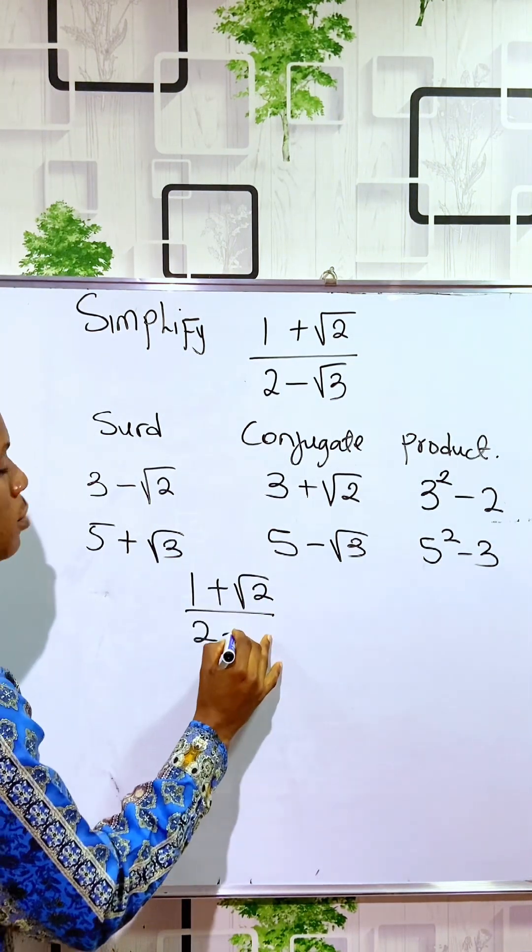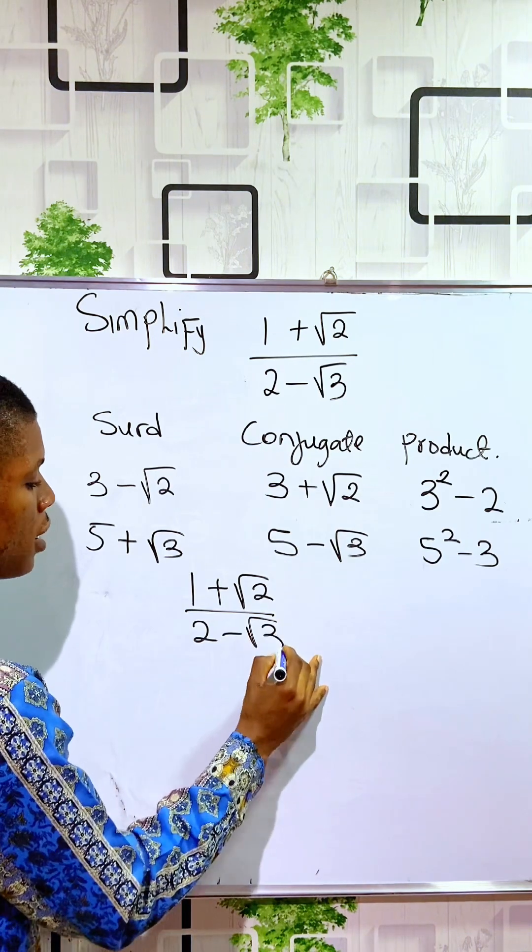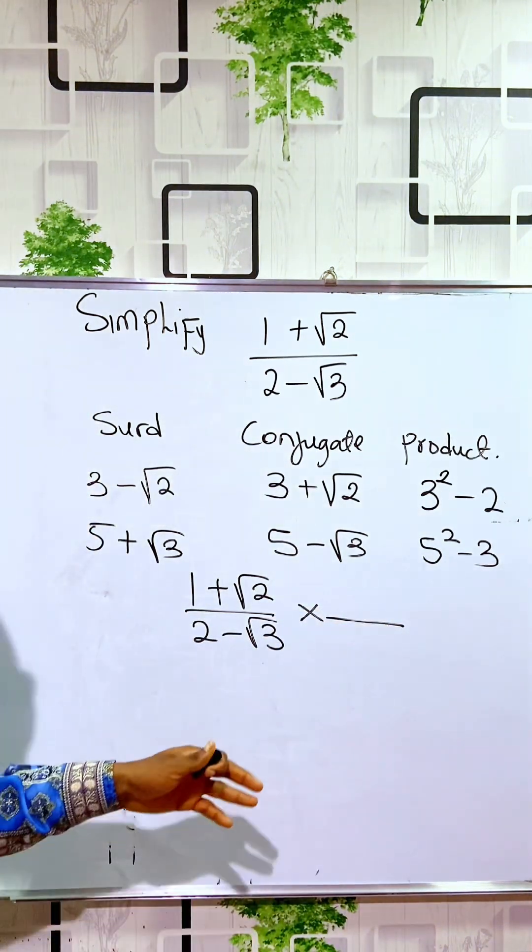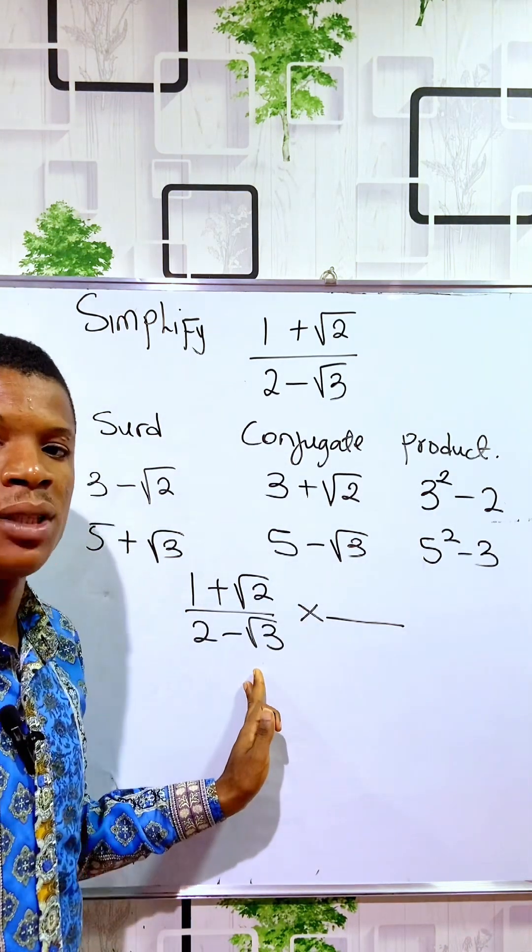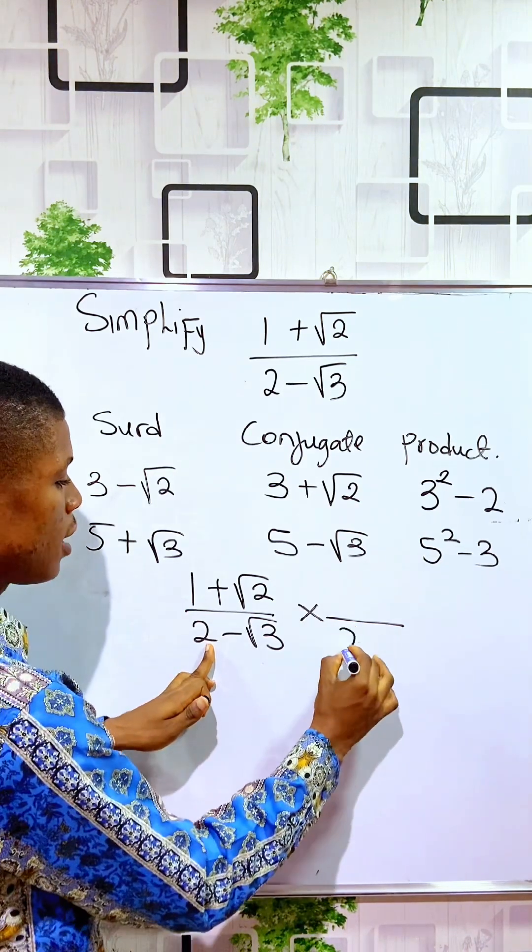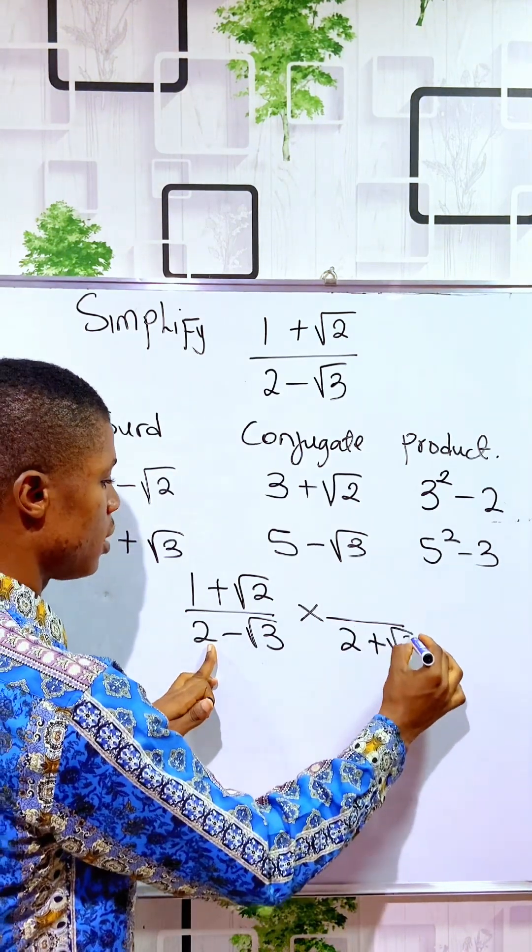All you have to do is just multiply the conjugate surd to the denominator and numerator to maintain equivalency. So the conjugate here will now be 2 + √3. The conjugate here is also 2 + √3, only the conjugate of the denominator.